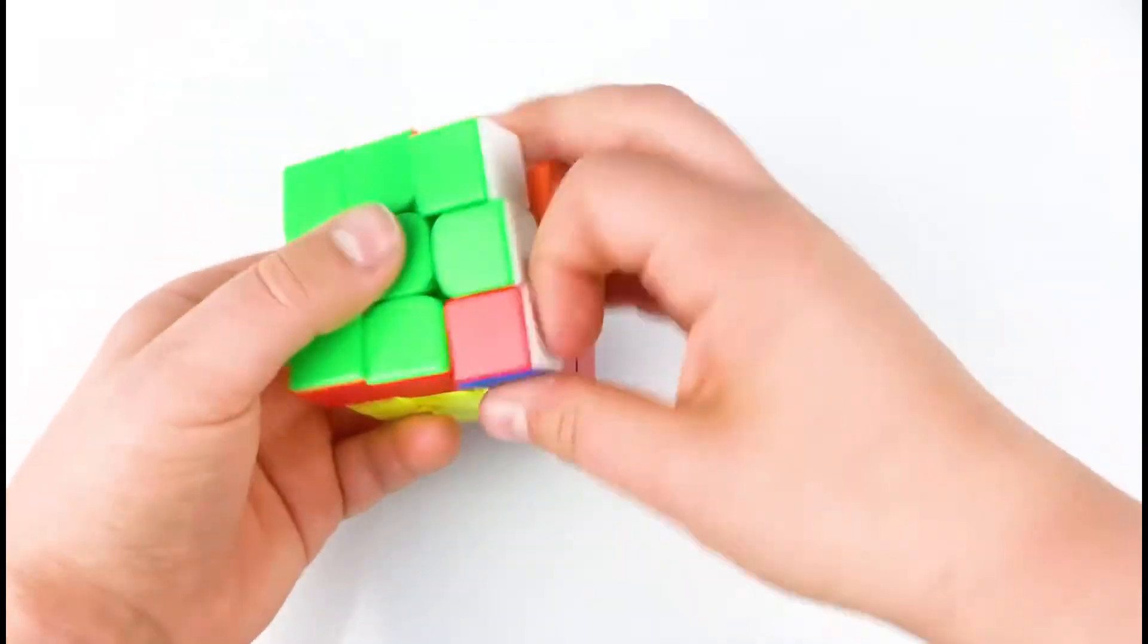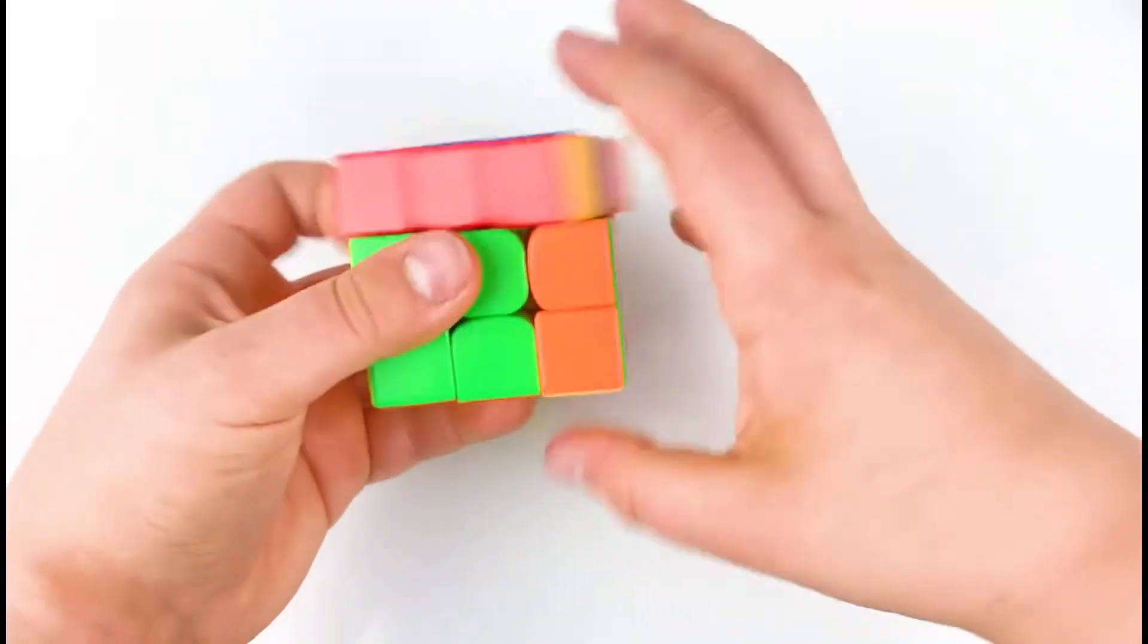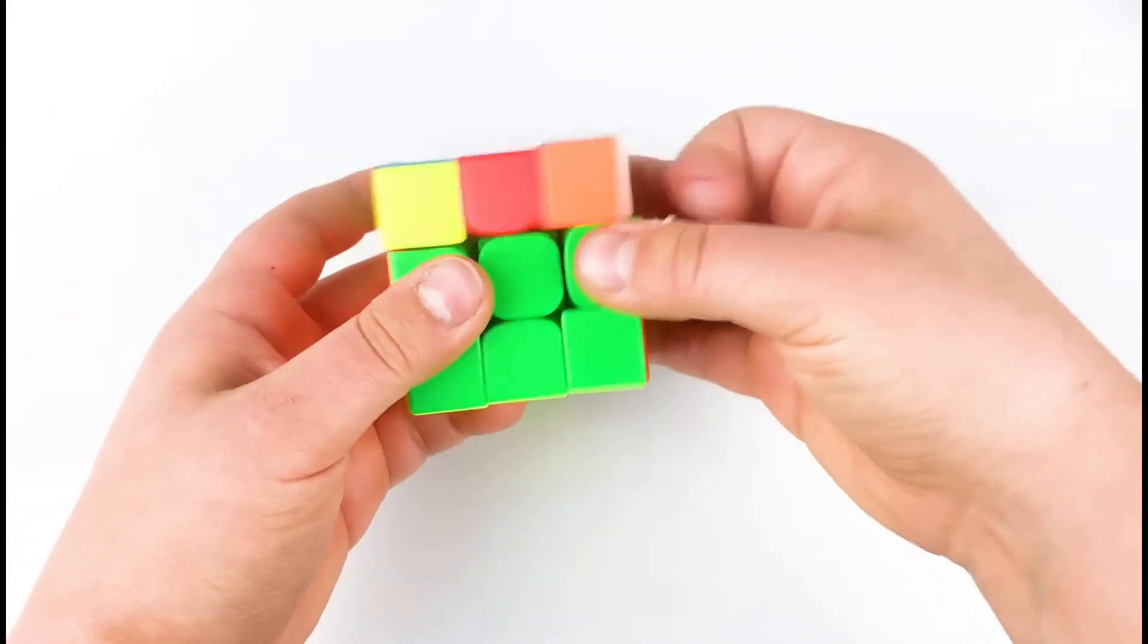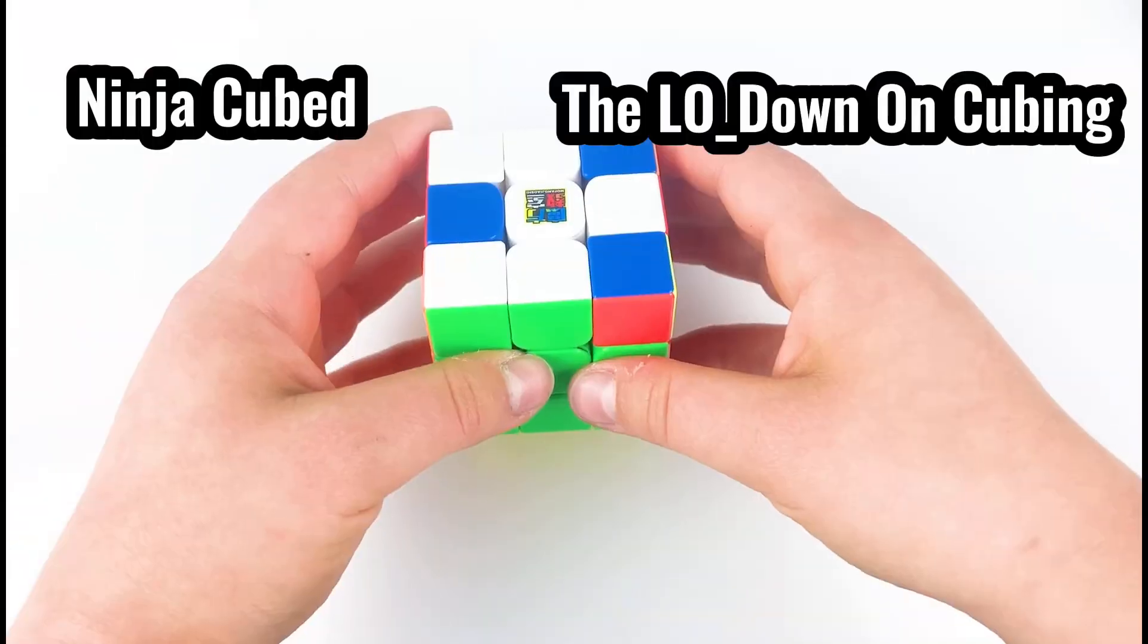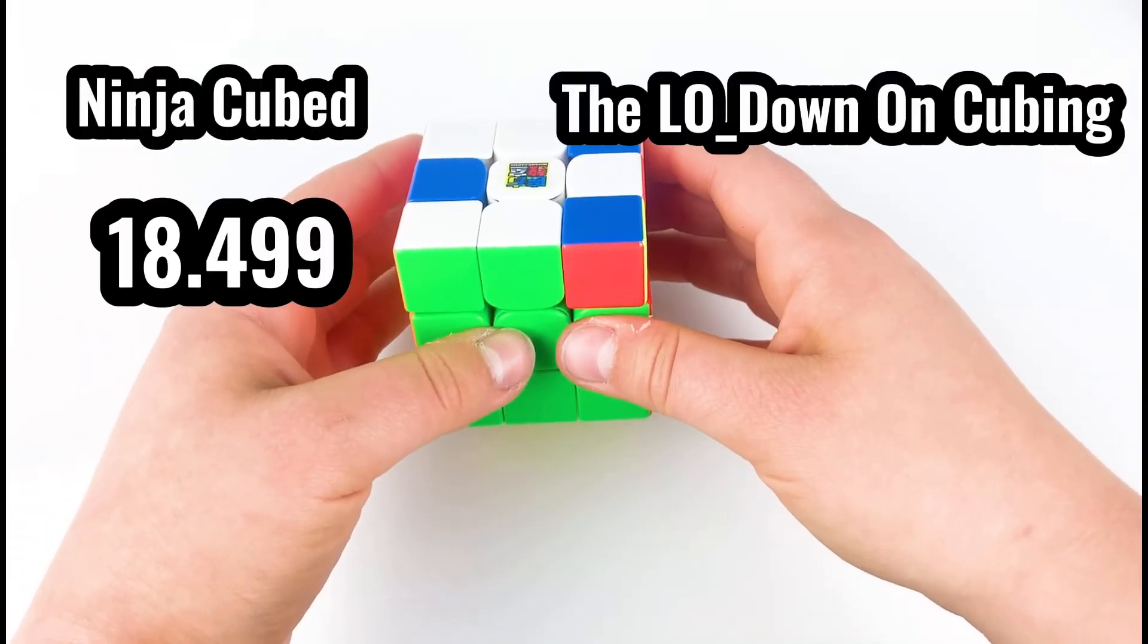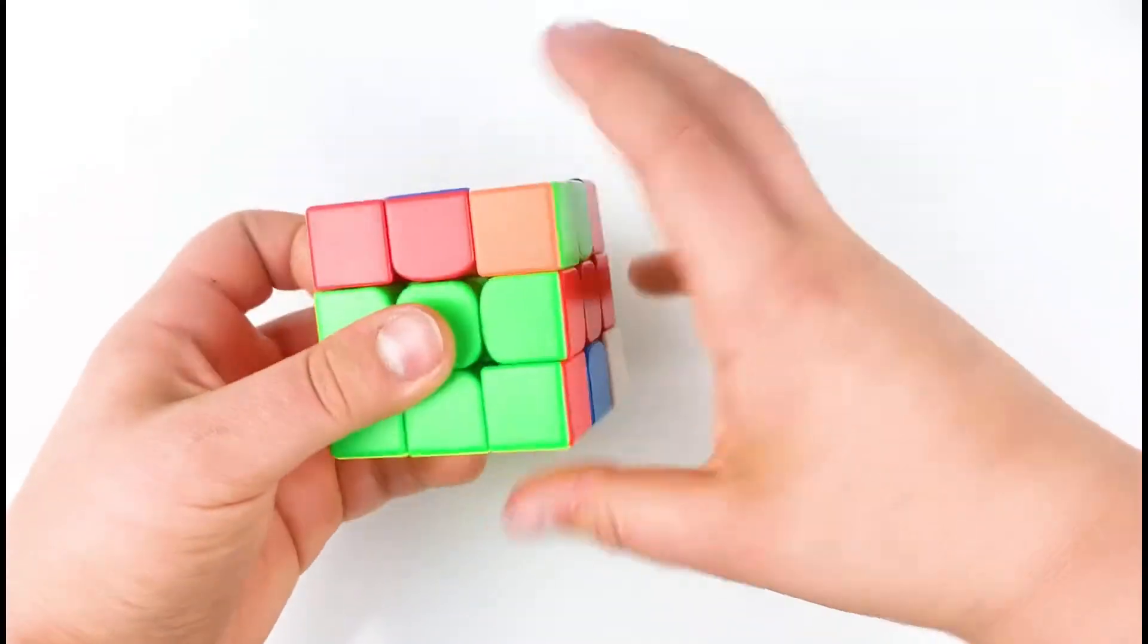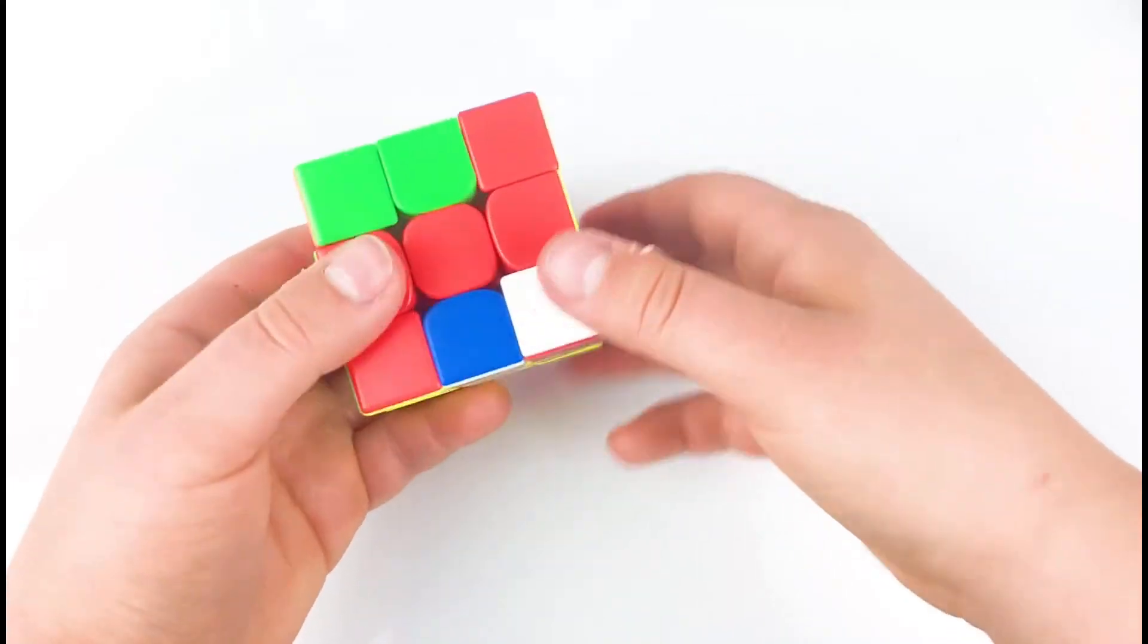The actual results were kind of interesting. Because as you could see, the low down on cubing won the best out of five. However, the averages I actually won. My average was 18.499. His was 19.237. Now the reason is because I had two solves that were very good. One was a 15 and one was a 16.